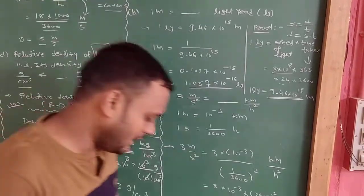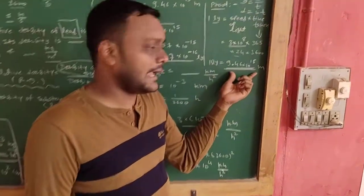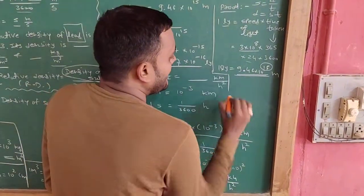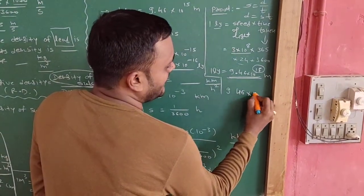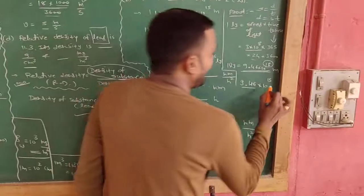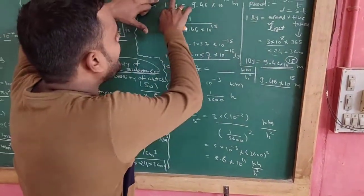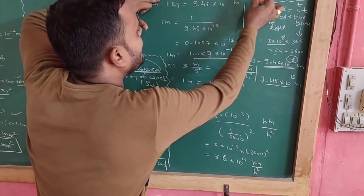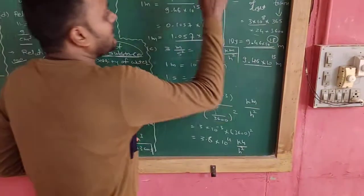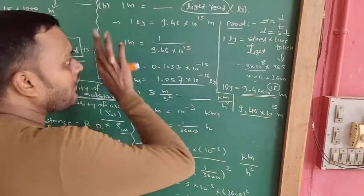Here is a shortcut to remember: one light year = 9.46 into 10 raise to 15 meter. Think of it as: in 9th standard, a student worked so hard that they got 15 awards — the award is the power of 10, and 9.46 is the coefficient. So you can remember: one ly = 9.46 into 10 raise to 15 meter.